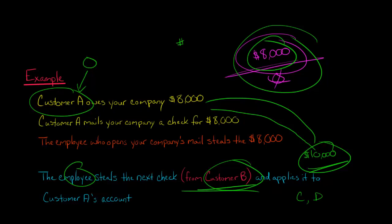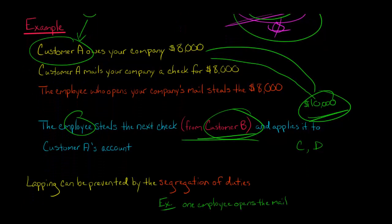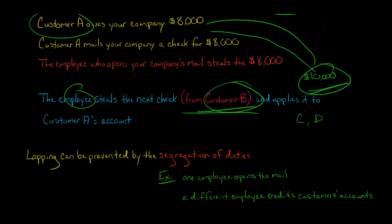So then the employee is going to have to steal from customer C and customer D and so forth. So the fraud just continues. They're basically, as new checks come in the mail, they steal those, and they credit them against the prior customer's account. So they're constantly stealing from customers but using the new money from customers to credit the prior customer's balance so that no one ever finds out about this.